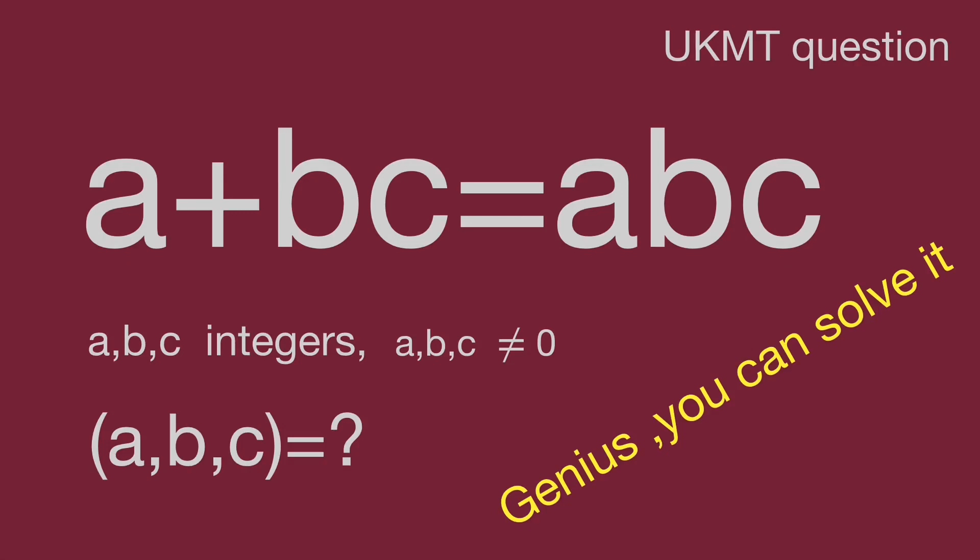A simple equation: A plus BC equals ABC. A, B, C are integers and A, B, C not equal to zero. Find a number group for A, B, C.